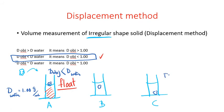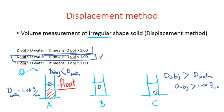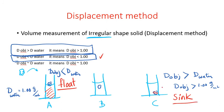If it's on the bottom, we say the density of the object is greater than the density of water because it is heavier, so density of object is greater than 1.00 gram per mL. What do you call that? If the object is going to be on the bottom of the container, it is going to sink. Sink means density of object is greater than 1.00.